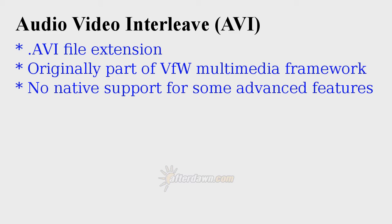That means if you need to read an AVI file on some other platform — whether it's a Mac, a Linux box, or even a DVD player — you have to provide an alternate means to open it. The result of all this is that there are sometimes multiple workarounds, or hacks, used to support modern video features.